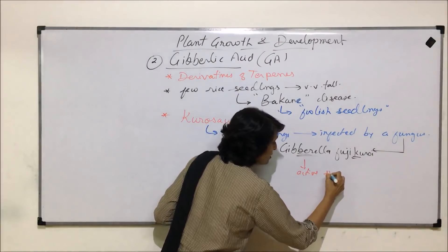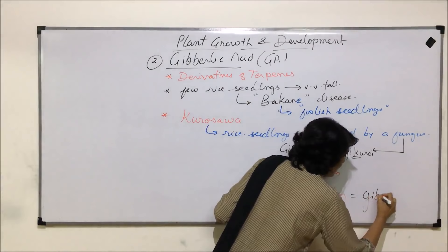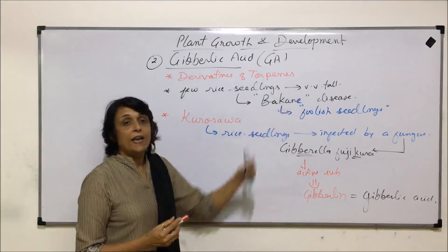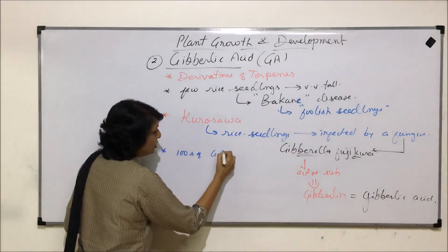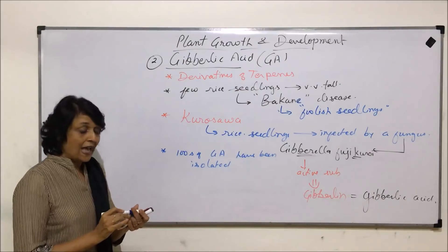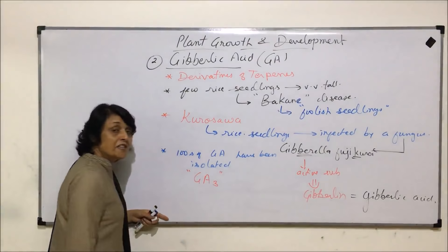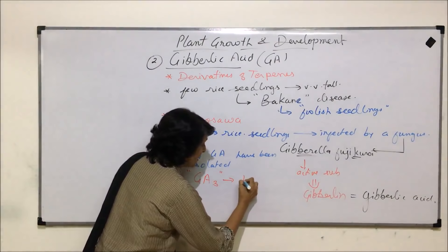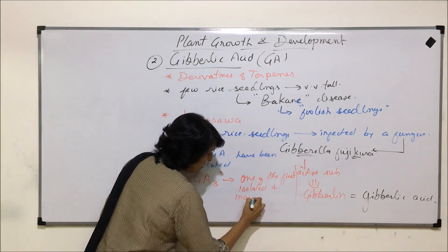The active substance was called gibberellins, and later on it was found out that those chemicals were gibberellic acids. That is why we write GA, or gibberellic acid. Up till now, hundreds of gibberellins have been isolated. The one which was among the first isolated and has been studied the most is GA3. They are written as GA1, GA2, GA3, and so on.